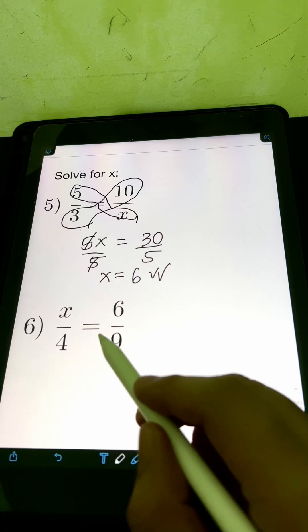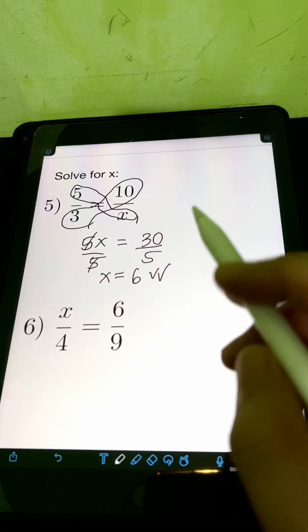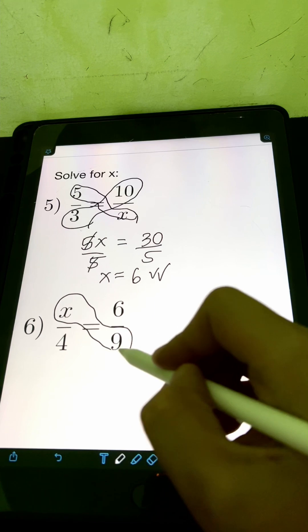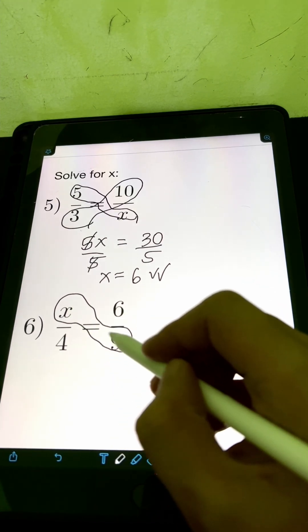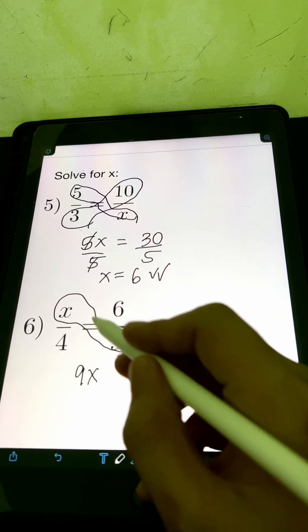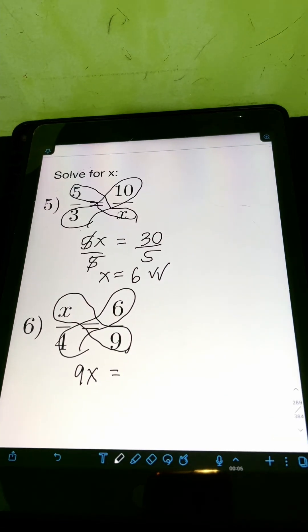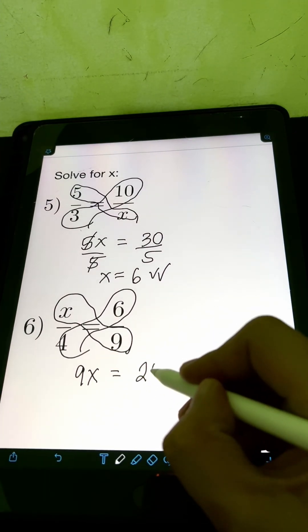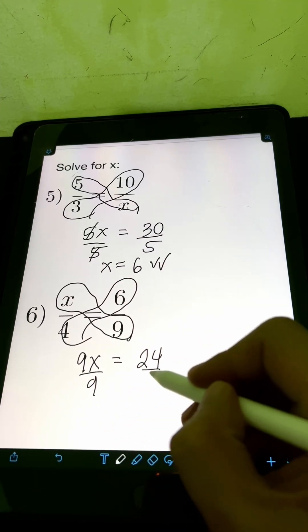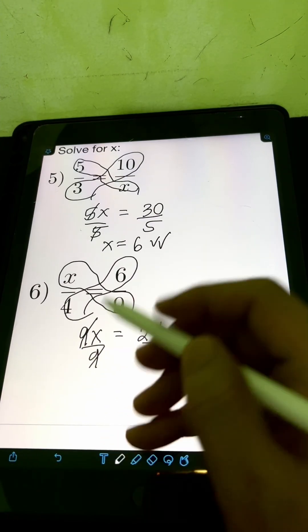Next, x over 4 is equal to 6 over 9. Again, applying cross multiplication. Multiply x times 9 or that's 9x. Equate it to the product of 6 times 4 or 24. So we can divide both sides by 9.